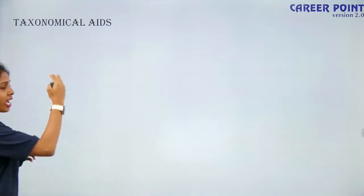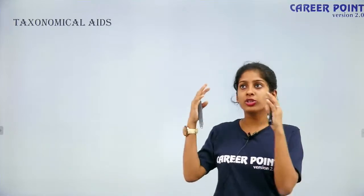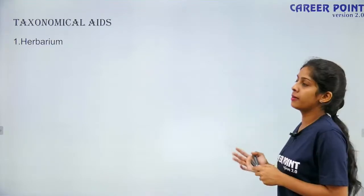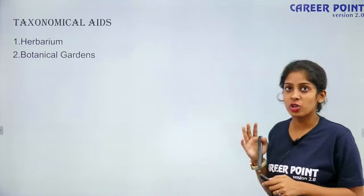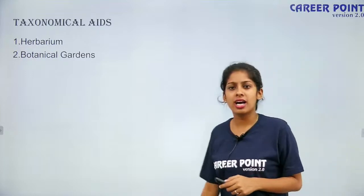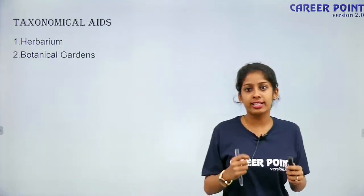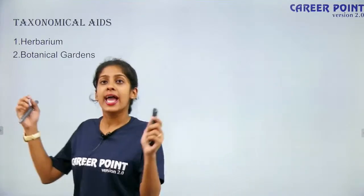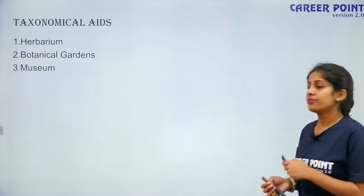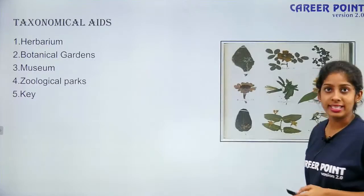Taxonomical aids — aid means help. There are certain tools which help in your classification. The taxonomical aids are: herbarium, botanical gardens, museum, zoological parks, and keys. We will talk about each of them in detail.